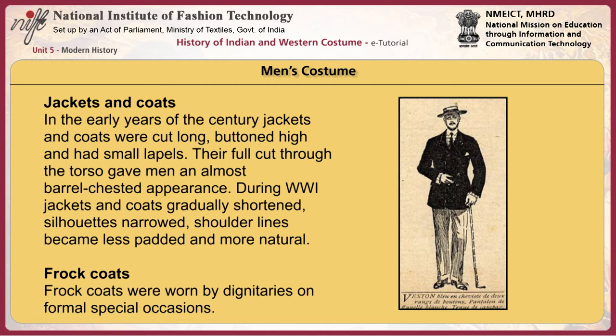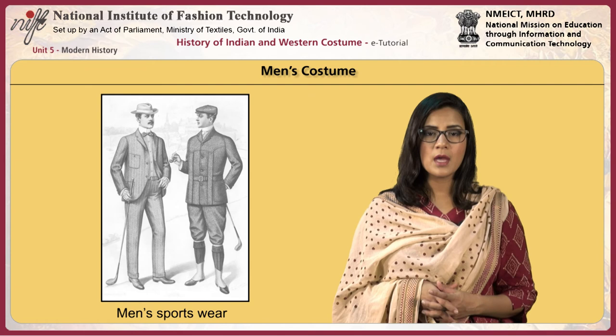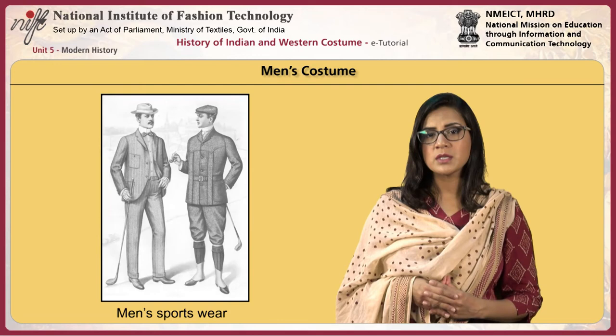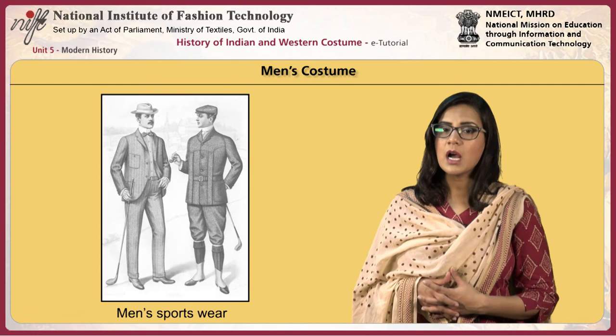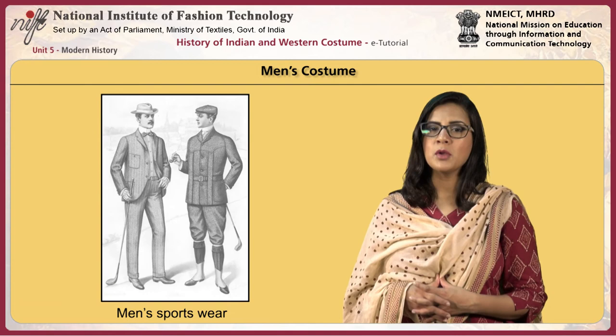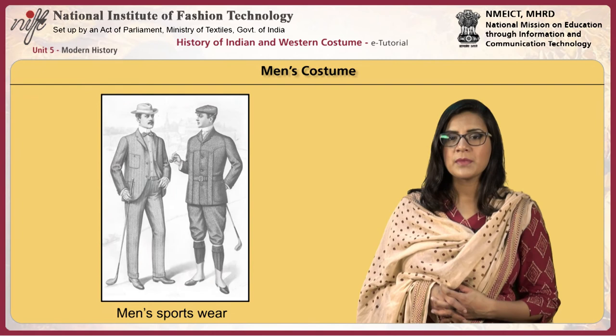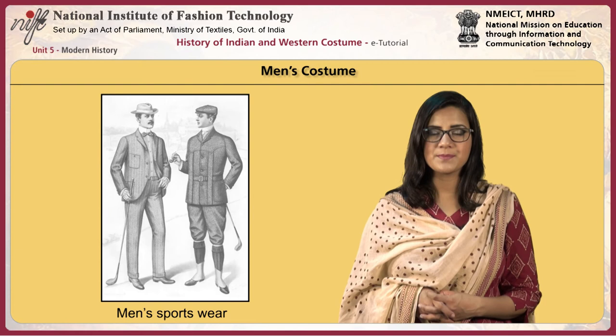In the early years of the century, jackets and coats were cut long, buttoned high, and had small lapels. Their full cut through the torso gave men an almost barrel-chested appearance. During the First World War, jackets and coats gradually shortened, silhouettes narrowed, and shoulder lines became less padded and more natural. Frock coats were worn by dignitaries on formal special occasions. Morning coats were worn for daytime formal occasions. After the war, this costume was limited to the upper class or political leaders for formal occasions. Sack jackets, also known as lounge coats, became the standard suit jacket, also worn as a sports jacket.